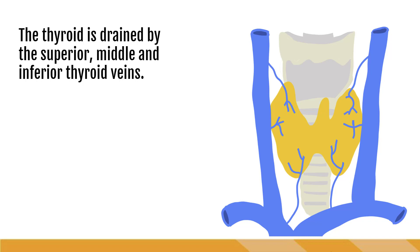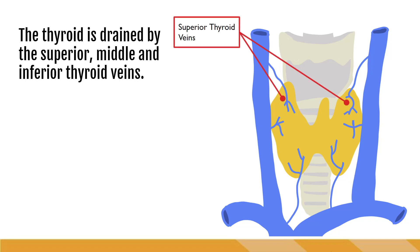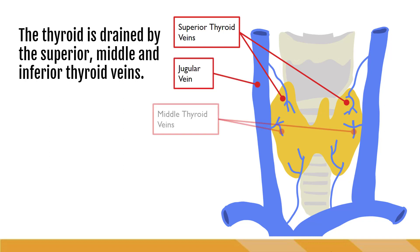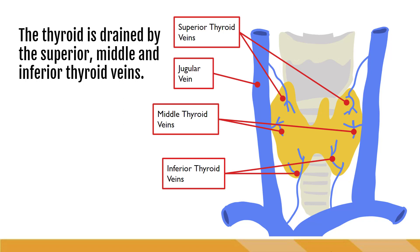The thyroid is drained by the superior, middle, and inferior thyroid veins. The right and left superior thyroid veins run near the superior arteries and drain into the internal jugular veins. The middle thyroid veins also drain into the jugular veins, and the right and left inferior thyroid veins arise from the venous plexus that allows all thyroid veins to communicate. The inferior veins connect into the right and left innominate veins.